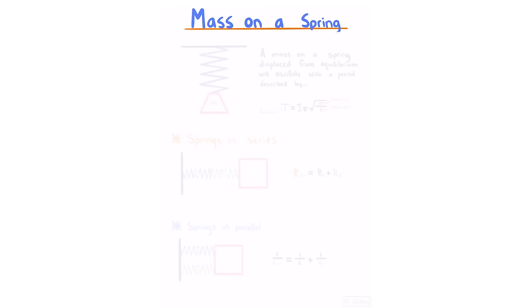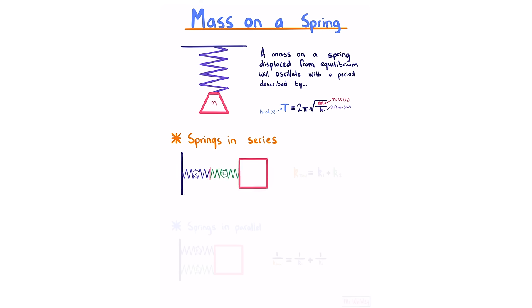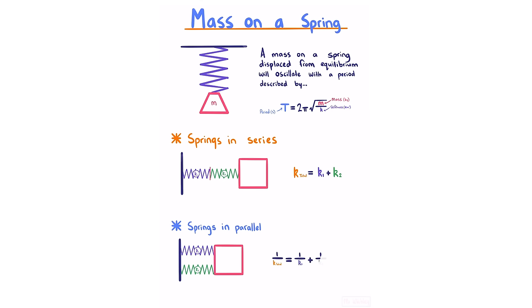Mass on a spring. A mass on a spring displaced from equilibrium oscillates with a period T equals 2π times the square root of M over K. For springs in series, the total stiffness K is the sum of individual stiffnesses. For springs in parallel, 1 over K equals the sum of 1 over each individual K.